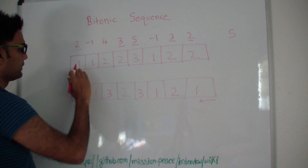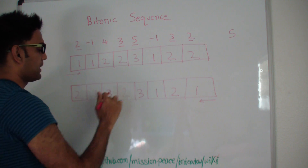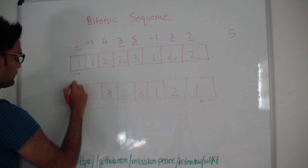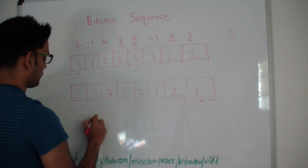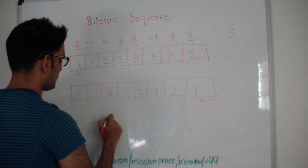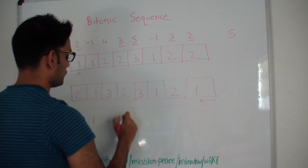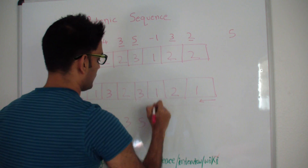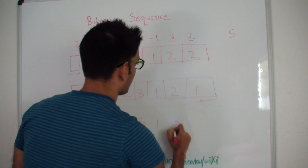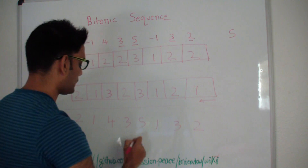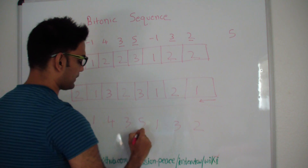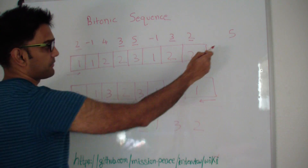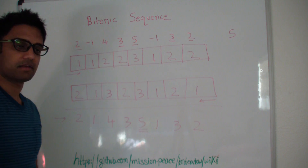The longest bitonic sequence will be the sum of these at every point, minus 1. So at every point the bitonic sequence is: 3 minus 1 = 2; 1 minus 1 = 1; 5 minus 1 = 4; 2 plus 2 = 4, minus 1 = 3; 3 plus 3 = 6, minus 1 = 5; then 1, 3, and 2. Finally, iterating through this list, the longest bitonic sequence we can have is of length 5, which is what I initially found out.